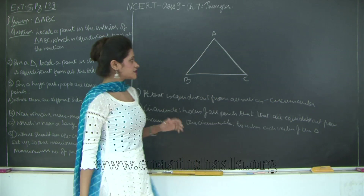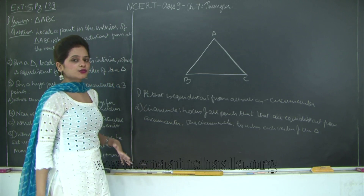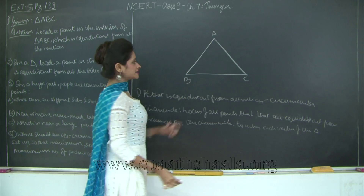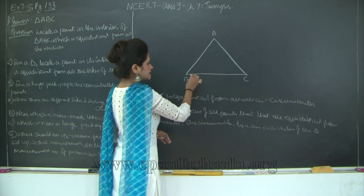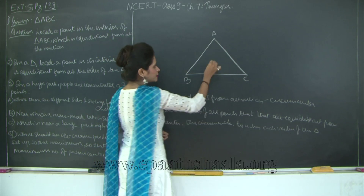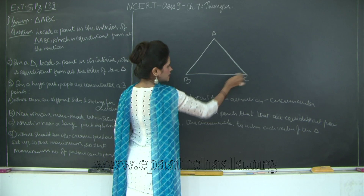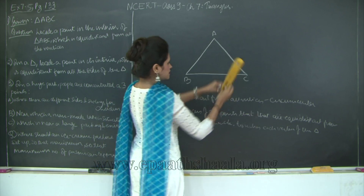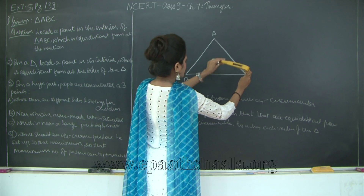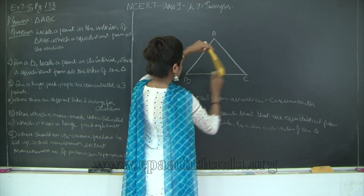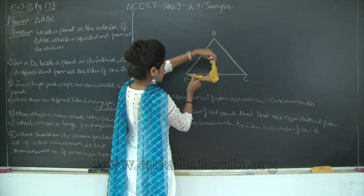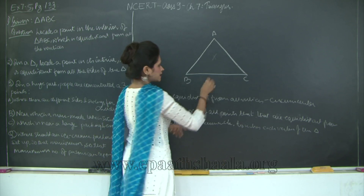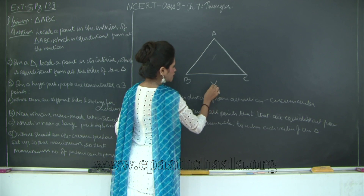So how do we draw the circumcenter and then, using the circumcenter, how do we draw the circumcircle? First of all, you will take the perpendicular bisectors of any two sides. Let's say I take the perpendicular bisector of BC. You will keep your compass more than half and draw a perpendicular bisector. Similarly, you will draw a perpendicular bisector for any other two sides.